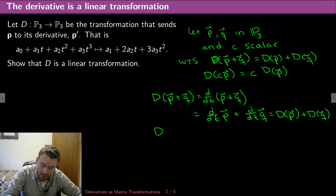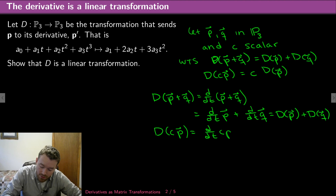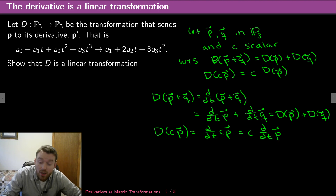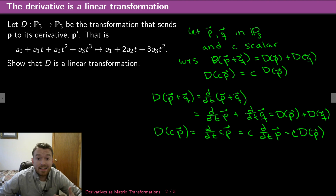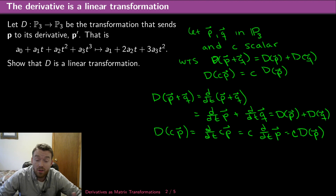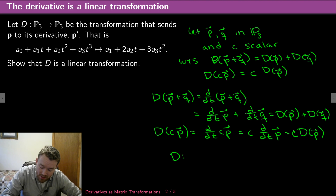We can do something very similar to show we can factor scalars out. D of C times P is just the derivative of C·P, which is C times the derivative of P because we can factor out scalars from derivatives — just from calculus. And that's C times D of P. Notice I didn't use anything about these even being polynomials. This is true for general functions. So this actually generalizes to Pn: if I have D from Pn to Pn by derivative, this is also linear.